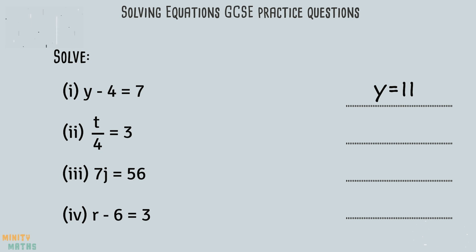For question 2, t has been divided by 4, so we need to multiply both sides by 4 to cancel out the division and leave t on its own.